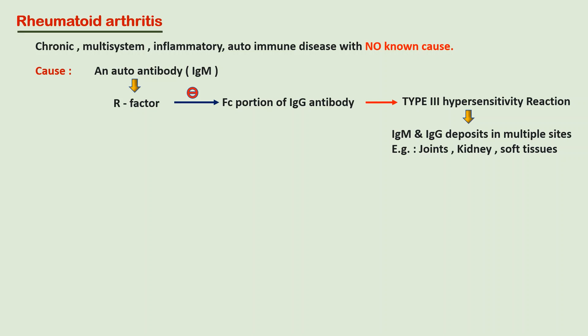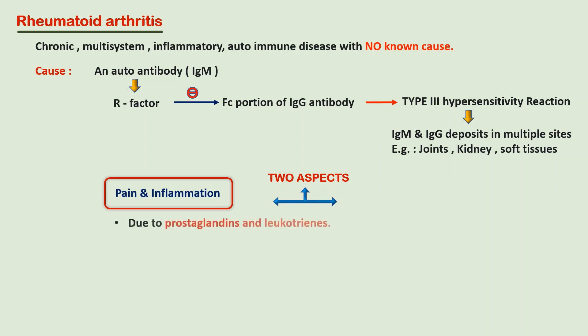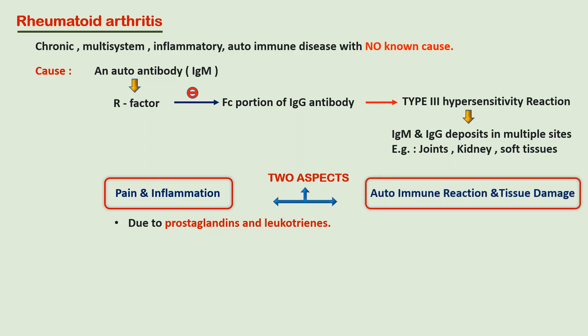To treat rheumatoid arthritis, we need to focus on two aspects. One is the pain and inflammation, mainly produced due to prostaglandins and leukotrienes, and the other is the autoimmune reaction and tissue damage. To relieve pain and inflammation, we use NSAIDs and glucocorticoids.